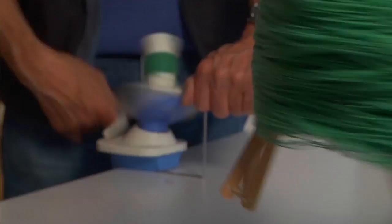We use a swift, an umbrella swift and a ball winder, and take the yarn and spread out the skeins onto the umbrella swift and wind it into balls.